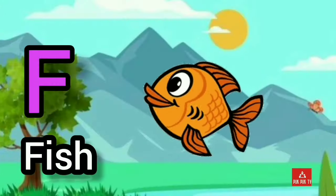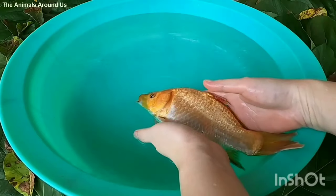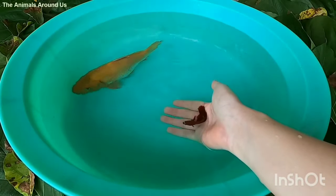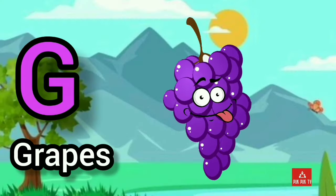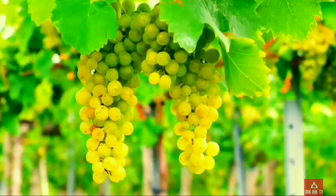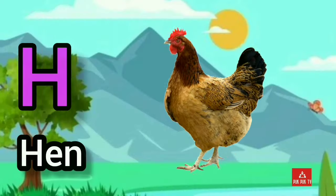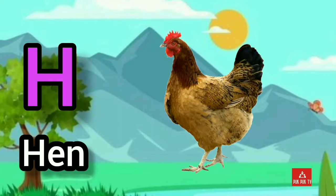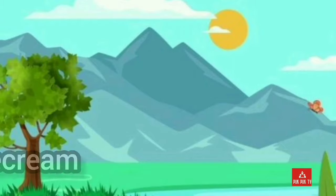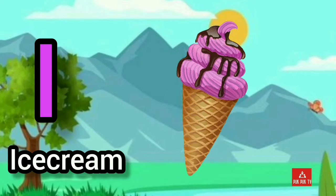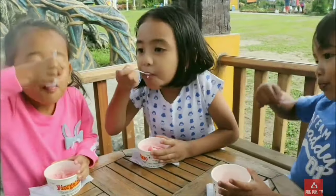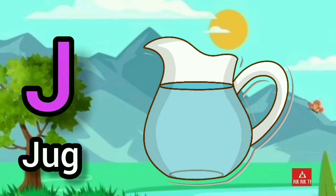F. F for Fish. G. G for Grapes. H. H for Hen. I. I for Ice Cream. J. J for Jog.